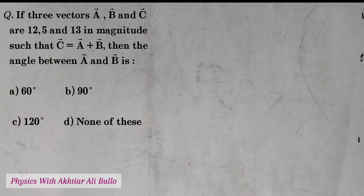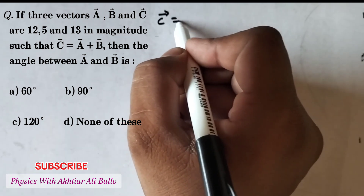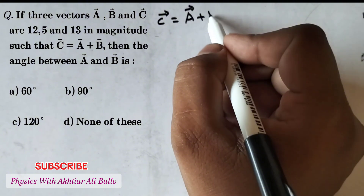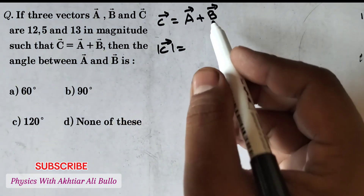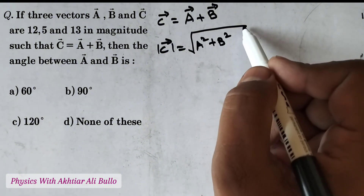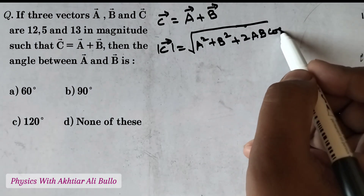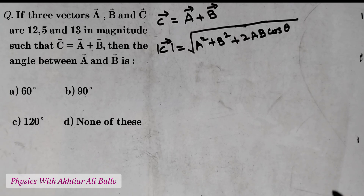The question is: if three vectors a, b, and c are 12, 5, and 13 in magnitude such that vector c is equal to vector a plus vector b, then the angle between a and b is: a) 60 degrees, b) 90 degrees, c) 120 degrees, d) none of these. We have c equal to a plus b, so the magnitude of c will be equal to the magnitude of a plus b, which equals the square root of a squared plus b squared plus 2ab·cosθ. The value of a is 12, b is 5, and c is 13.